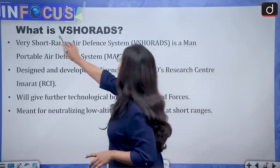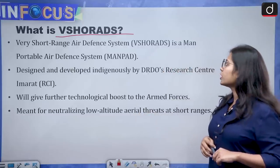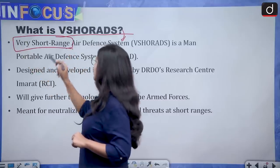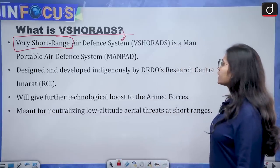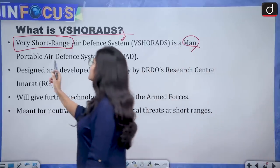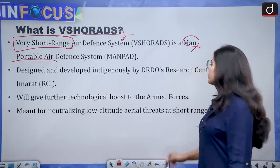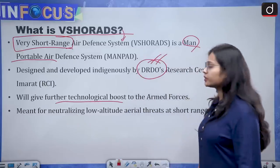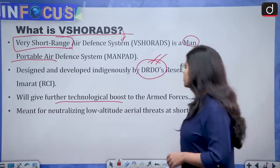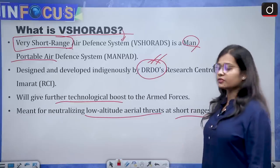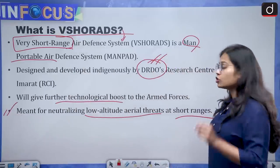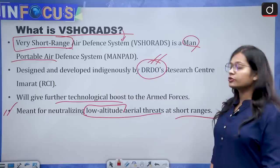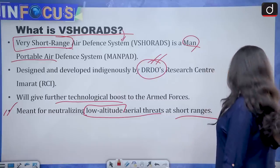VSHORADS — Very Short Range Air Defense System — was recently in news. The important term here is 'very short range.' It is a man-portable air defense system, meaning it can be taken from one place to another, and it was designed and developed by DRDO — an important point to remember. It will give a technological boost to our armed forces. Its purpose is to neutralize low altitude aerial threats at short ranges. Note: the examiner may try to trick you by saying high altitude or medium range, but it is specifically for low altitude threats at short ranges.